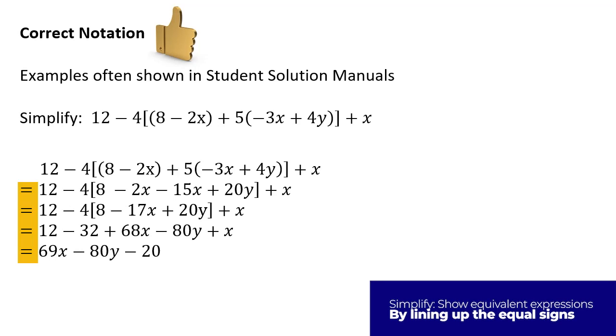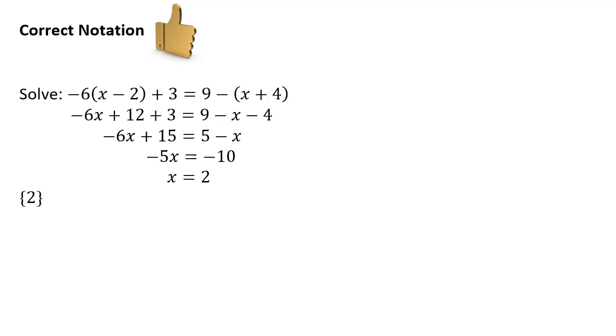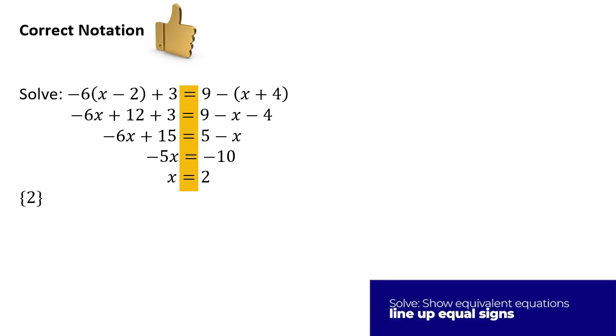It's not correct to leave the equal signs off. If the problem says solve, you are likely going to be able to find an answer. You show equivalent equations by lining up the equal signs. You know that this is an equation that can be solved because it begins with an equal sign, and at the end, we see the solution set.